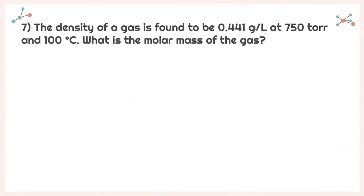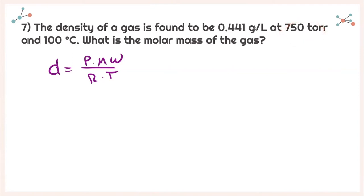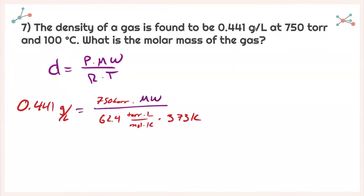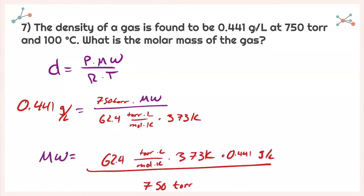For question 7, the density of a gas is found to be 0.441 grams per liter at 750 Torr and 100 degrees Celsius. What is the molar mass? Using density equals pressure times molecular weight divided by R times temperature, we need a different R value because we're in Torr, not atmospheres. We also need temperature in Kelvin. With those adjustments, isolating molecular weight gives us 13.7 grams per mole.